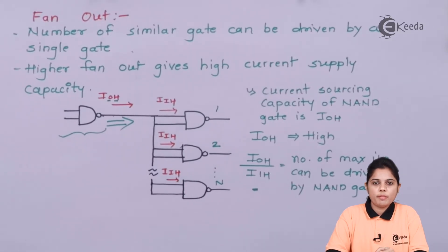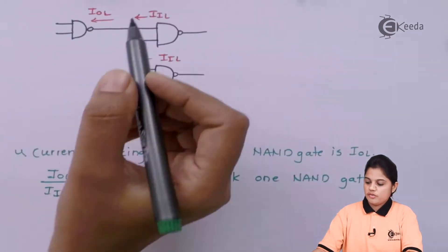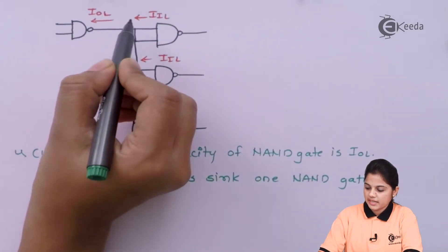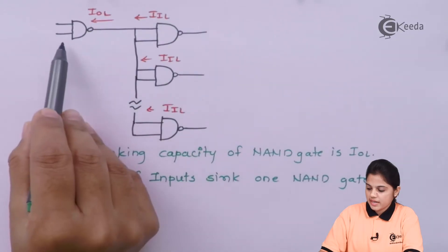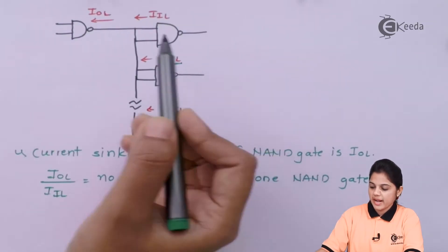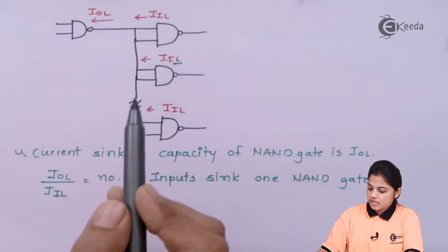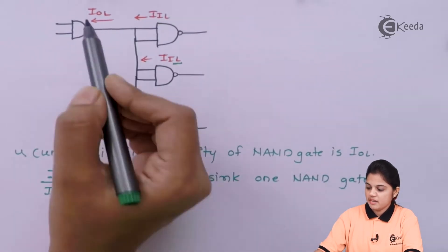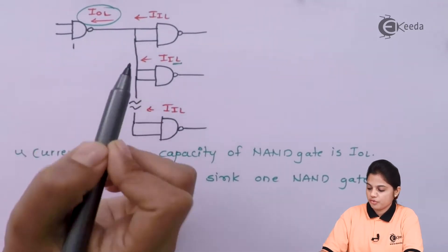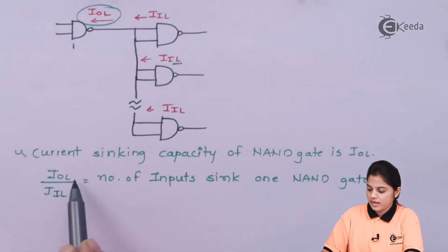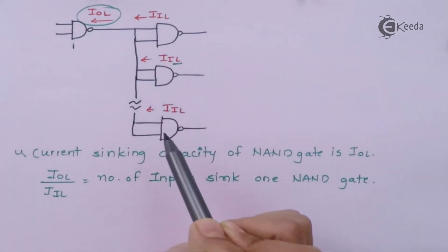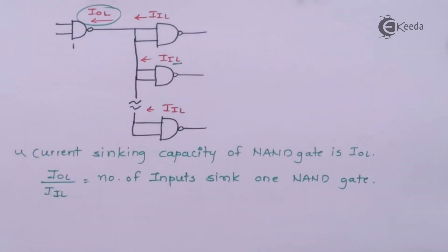Similarly, current sinking capacity can also be found. In the reverse operation, the multiple NAND gates connected at the output of a single NAND gate provide current to that single NAND gate, represented as IIL — input low current — and IOL is the output low current. The ratio of IOL divided by IIL gives the number of inputs one NAND gate can sink, meaning that many NAND gates' current can be supplied as sinking current to one particular NAND gate.